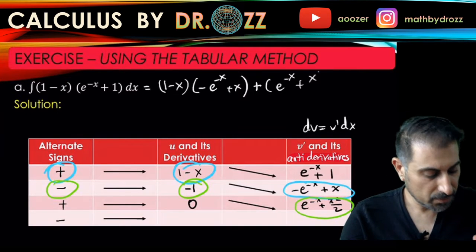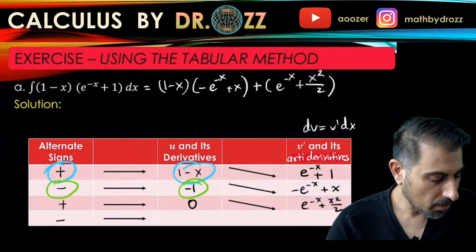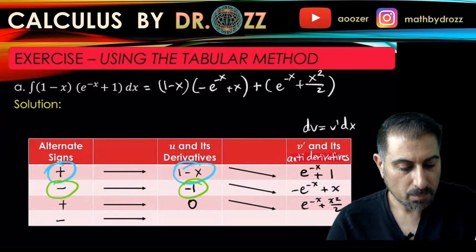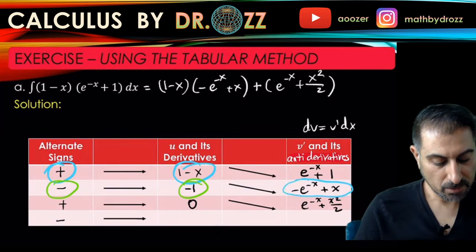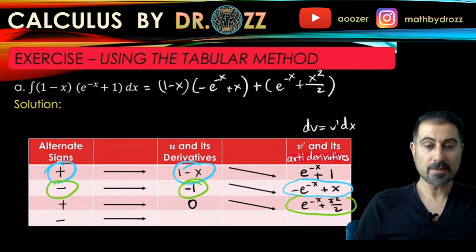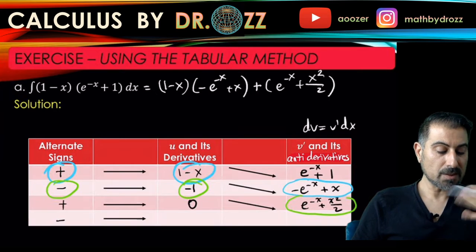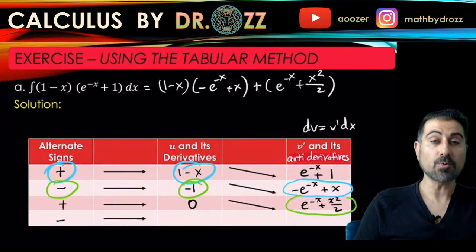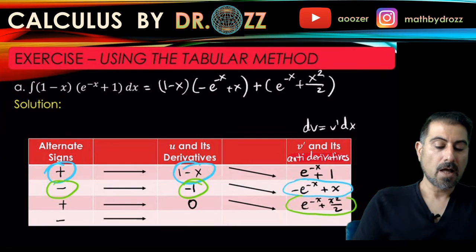Let me just clean this part so you can actually see the full picture. So plus 1 minus x times minus e to the minus x plus x, and then the next term is going to be minus times minus 1 times e to the minus x plus x squared over 2. I'm going to put an integrating constant here, and if you want you can go ahead and simplify this expression.